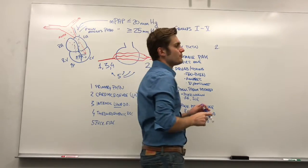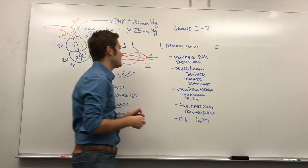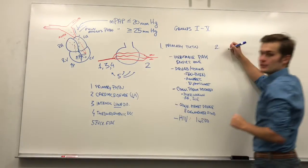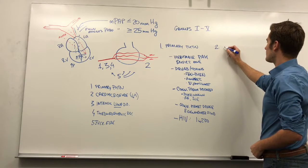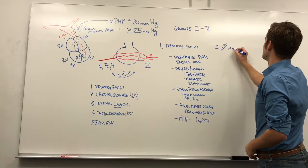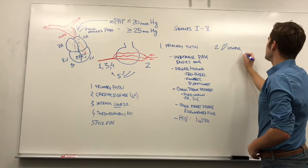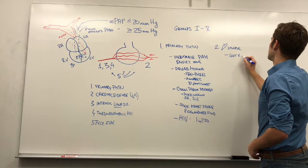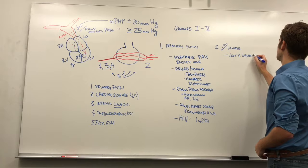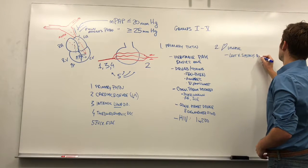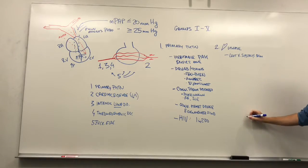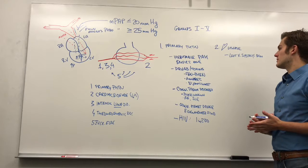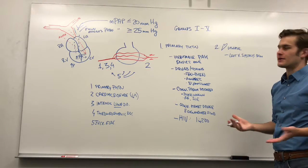This one's pretty simple. There are really three ways that this left-sided function can get disrupted. The big groups here will be left ventricular systolic dysfunction — this is where the left heart can't pump blood forward. An example would be dilated cardiomyopathy.